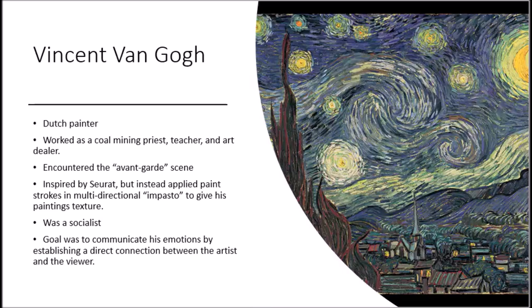Van Gogh was a socialist who believed that modern life, with its constant social change and focus on progress and success, alienated people from one another and from themselves. His own paintings are efforts to communicate his emotional state by establishing a direct connection between artist and viewer. He produced paintings that contributed significantly to the later emergence of Expressionism, in which the intensity of an artist's emotional state will override any desire for fidelity to the actual appearance of things.